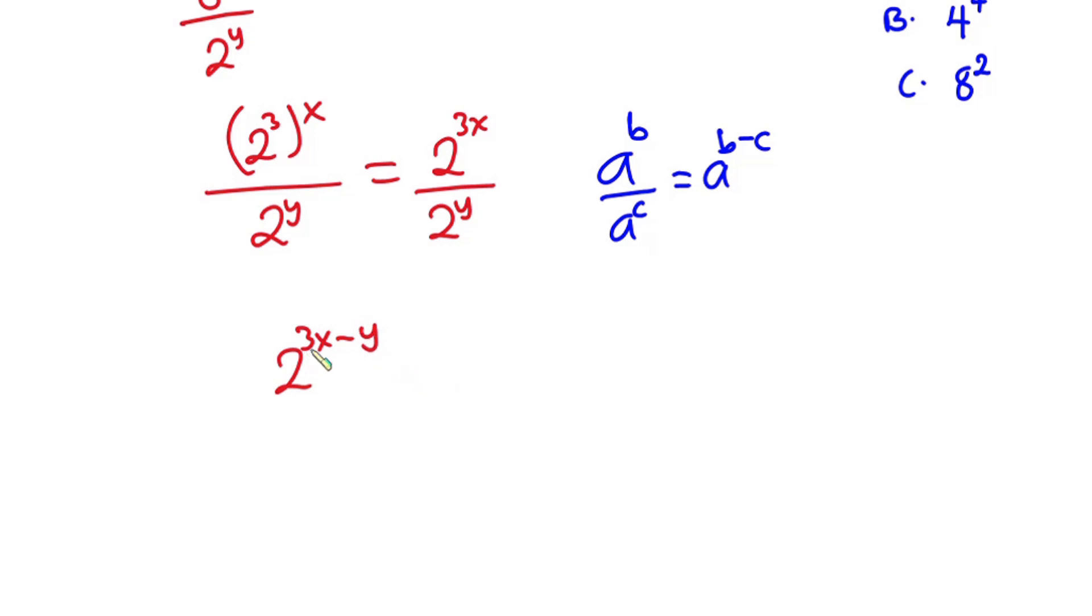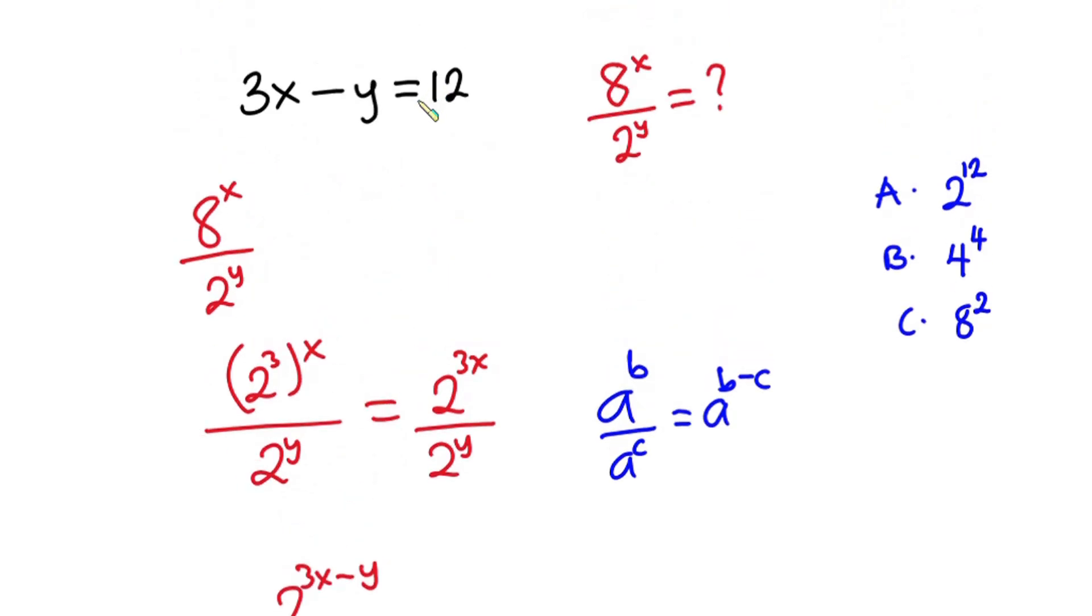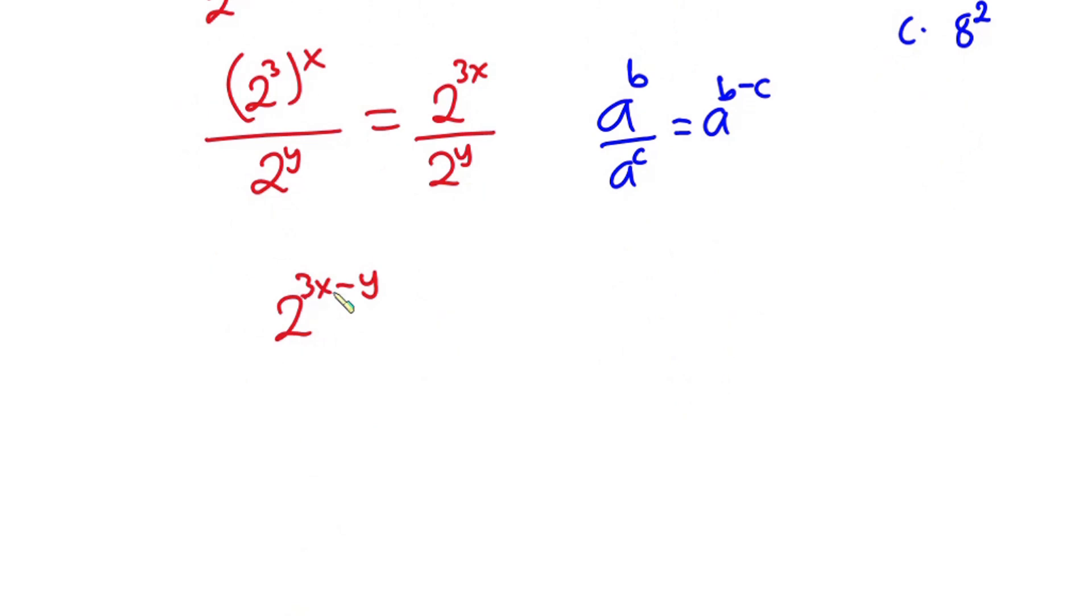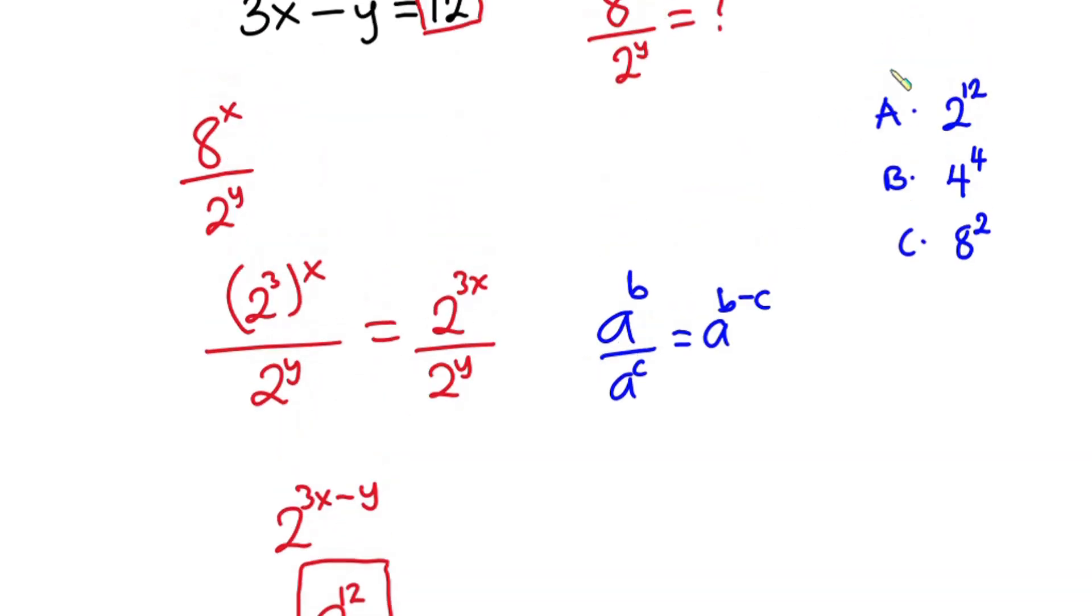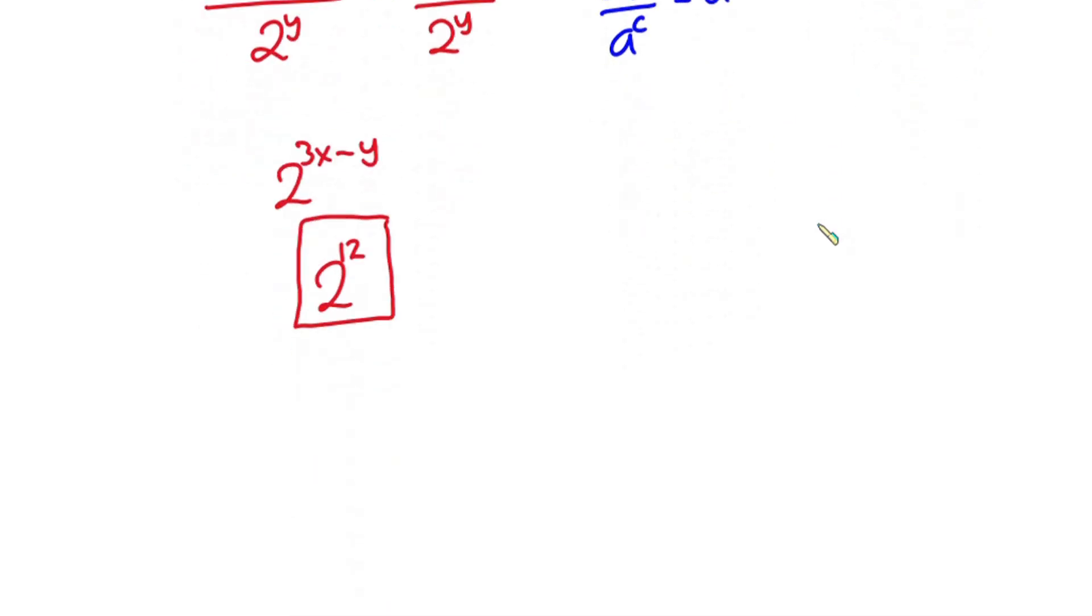And from the question we know 3x minus y, which is 12 over here. So in place of this whole term, I'm going to replace it by 12. So we have 2 to the power 12. And this is our final answer. So the correct option is option A. Now let's go to the second question.